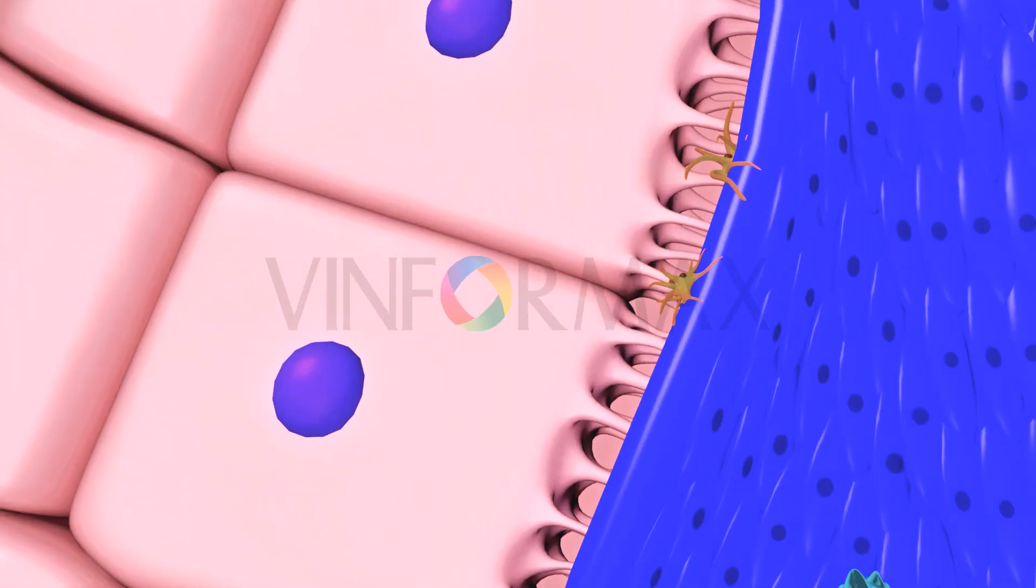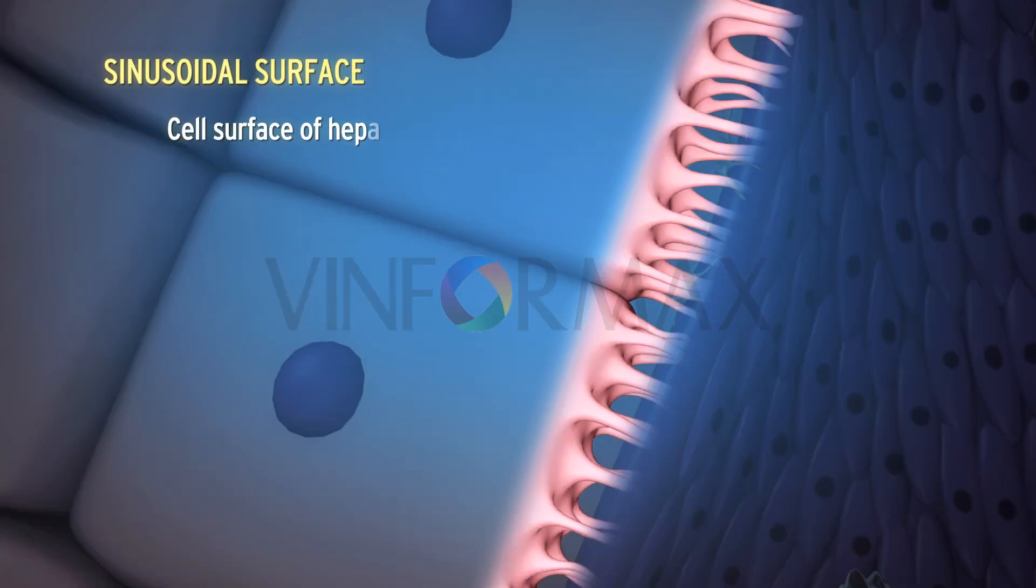The surface of the liver cell is separated from this endothelial lining of the sinusoid by the space of Disse. Each hepatocyte is polyhedral in shape. The surface of the hepatocyte shows three types of specialization: sinusoidal surface, canalicular surface, and intercellular surface.